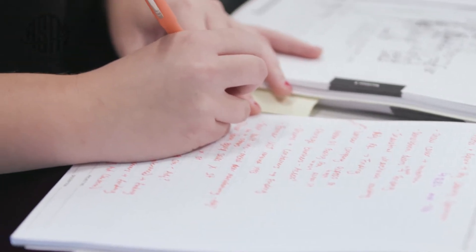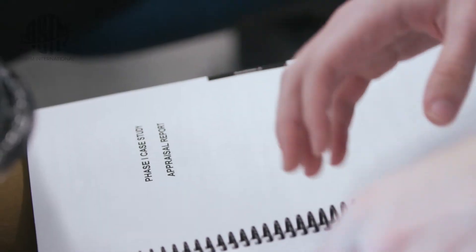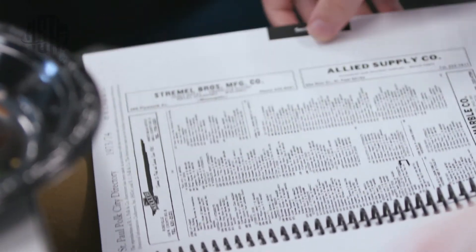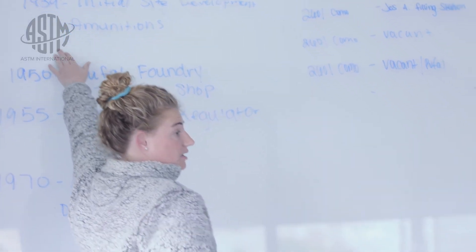You'll get copies of all presentation materials, as well as copies of the Phase I Standard, the Transaction Screen Standard, and the Forest Land Rural Property Standard. You'll also participate in a small group case study and work through portions of an actual Phase I assessment. You'll examine the documents, information, data, and photos, and study the conditions of an existing commercial property.